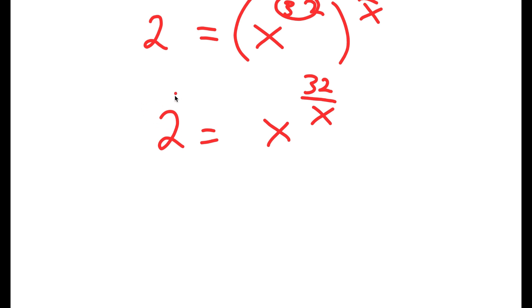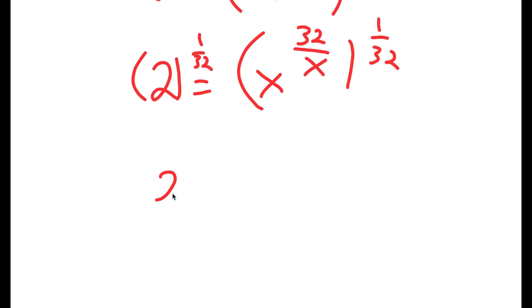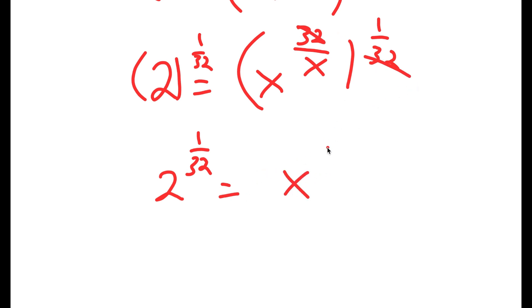From here, I'm going to take the power of 1 over 32 on both sides. So I get 2 to the power of 1 over 32 is equal to x to the power of 1 over x, since the 32 and 1 over 32 cancel out.